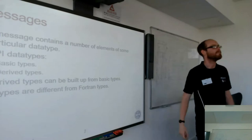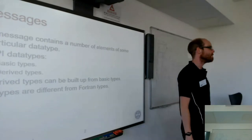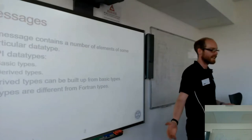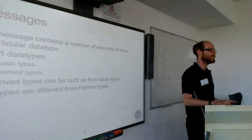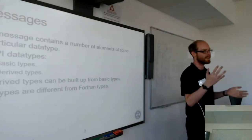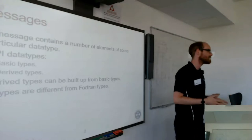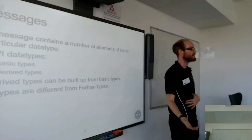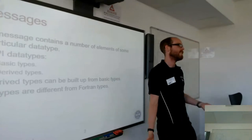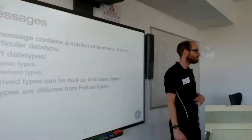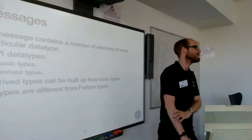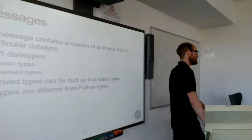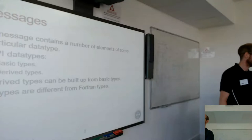So a message in MPI will contain a number of elements of some sort of data type. Usually it'll contain an array of some description, and this can be a basic type, so like real integer, or derived types, so like a combination of reals and integers in some kind of structure. Derived types are basically made up from basic types. In C and Fortran, you need to use slightly different types because C and Fortran don't necessarily have to use exactly the same sizes of bits for each variable.